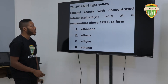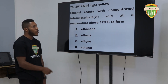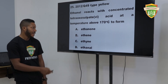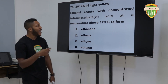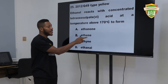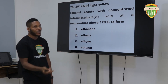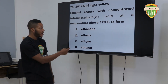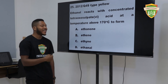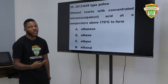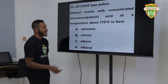Ethanol reacts with concentrated tetraoxosulfate(VI) acid at a temperature above 170°C. This is a two-phase reaction. With excess acid, you get ethene. Go back to your slide on the reactions of ethanol — you'll see the options there. Excess acid gives ethene, but excess alkanol gives ethoxyethane. So the answer there is ethene.